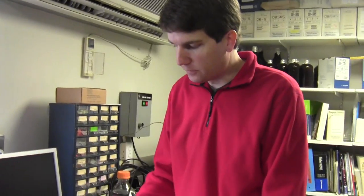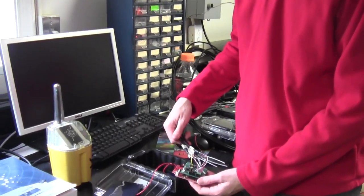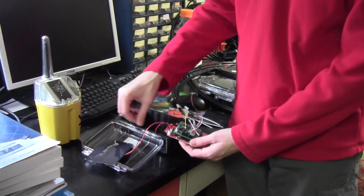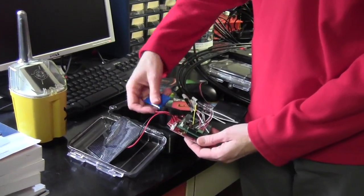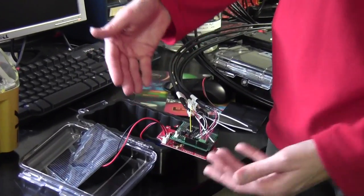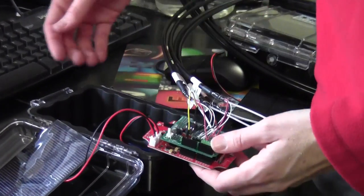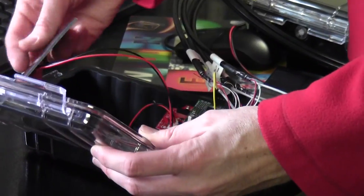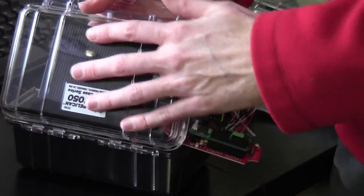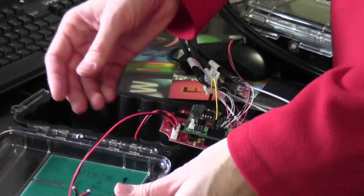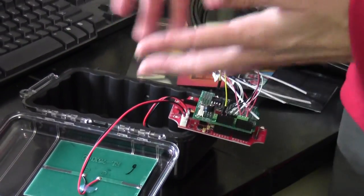This is our new version of our newest data logger board where we have solar panels, we have batteries that are charged by the solar panel, and then the instruments come in here. We put this all in a nice waterproof box which is clear so the solar panel can be recharged through the lid, and this whole setup costs less than $100.